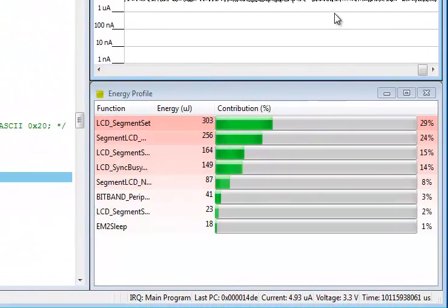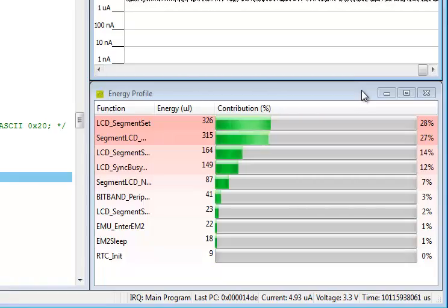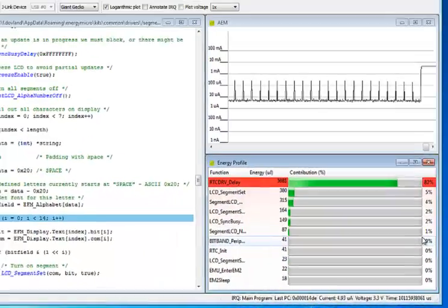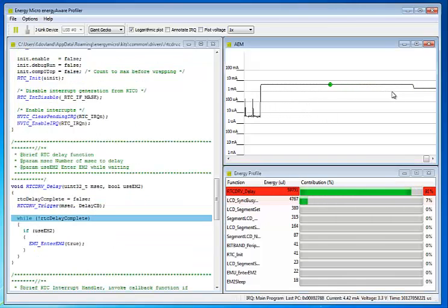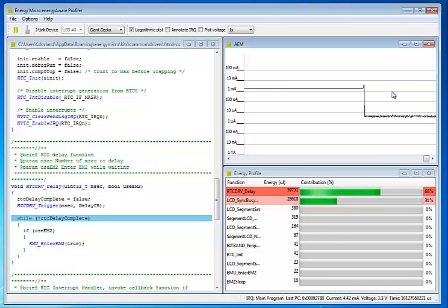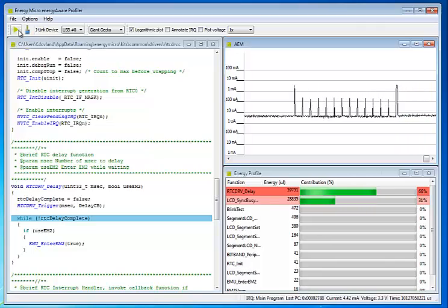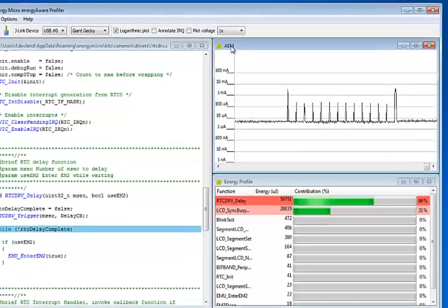The Energy Profile window shows the accumulated time spent in each function. We can pause the current profiling at any time if we want to inspect some part of the graph. We can zoom in and out by using the drop-down menu.